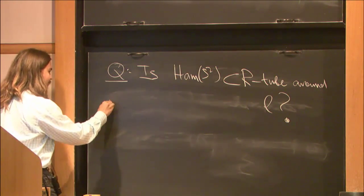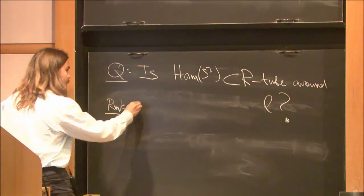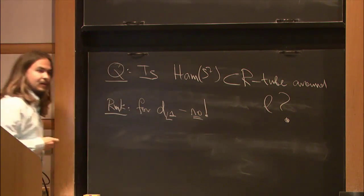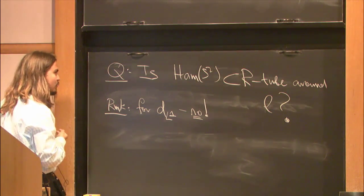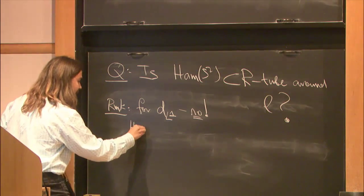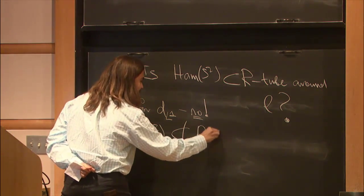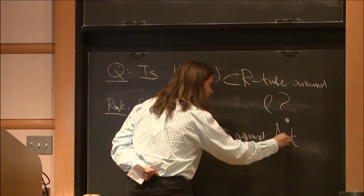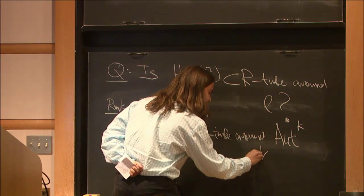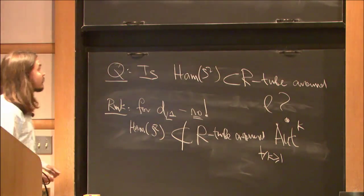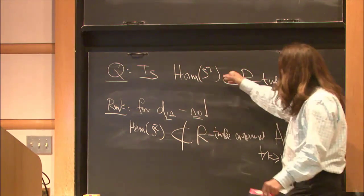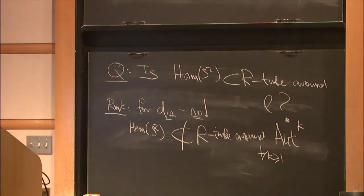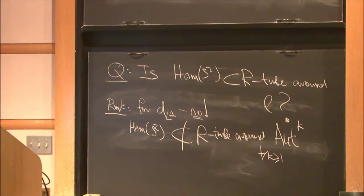However, a remark is that for the case of the L1 metric, the answer is no. In fact, in this case, one can show that Ham of S2 is not contained in R-tube around the products of K autonomous ones for all K. But if instead of the sphere we take something else, some other surface, one can show results for Hofer's metric too.